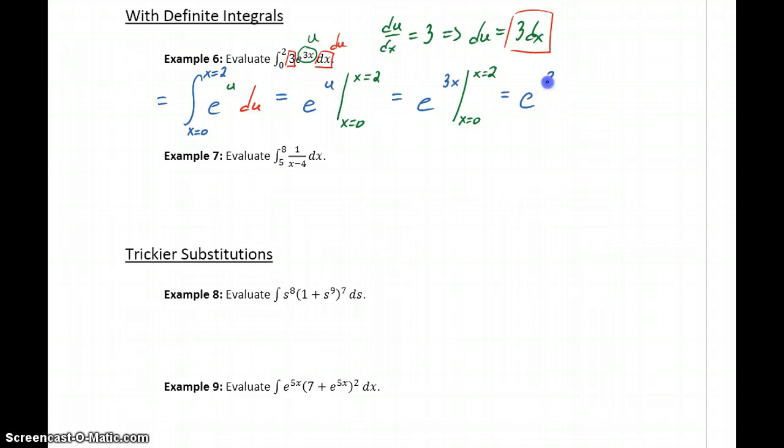So this would become e to the 3 times 2 minus e to the 3 times 0, which is just going to be 0. Anything to the 0 power is just 1. So we're going to get our final answer to be e to the 6th minus 1.